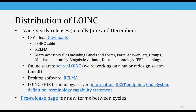We have twice-yearly distributions of LOINC. We have the downloads, which are CSV files. We also have RELMA and then many accessory files — I think we're approaching maybe 15 or so at this point. We have the online search application, which is also updated twice a year. We're currently working on a huge redesign of that application and planning to introduce it at the fall conference in a few weeks — so stay tuned. And we have the FHIR terminology services, which are currently still in beta status, but there's a lot of information about that at LOINC.org/FHIR. We also have a pre-release page that has all the new terms created between cycles.